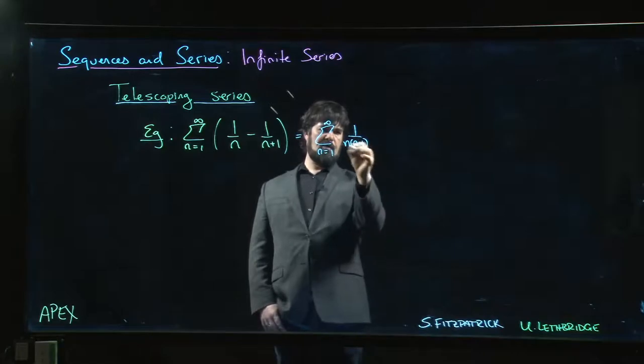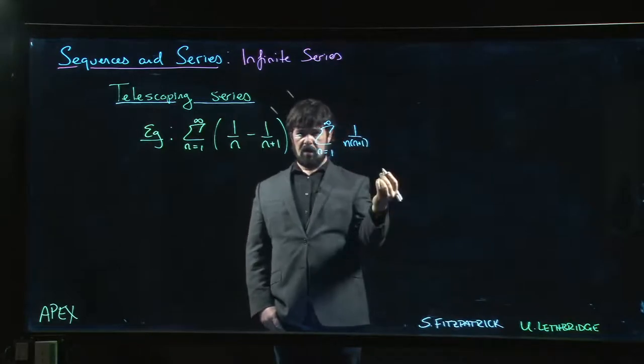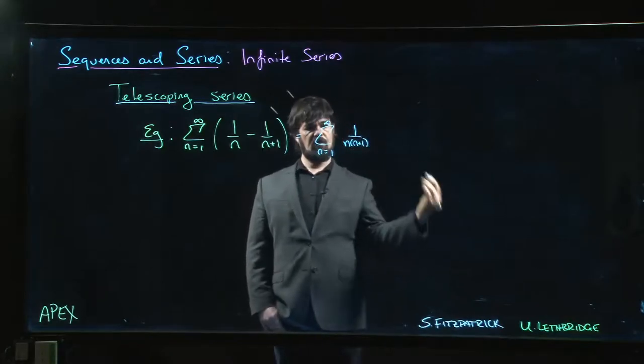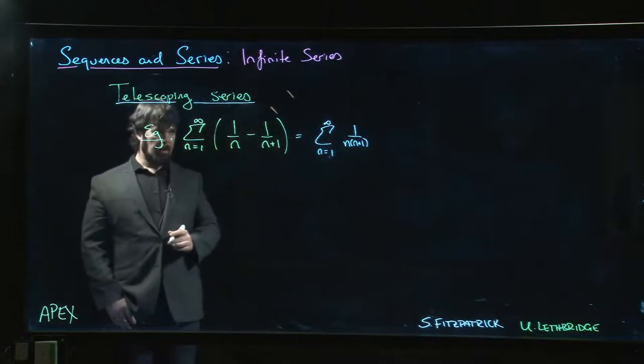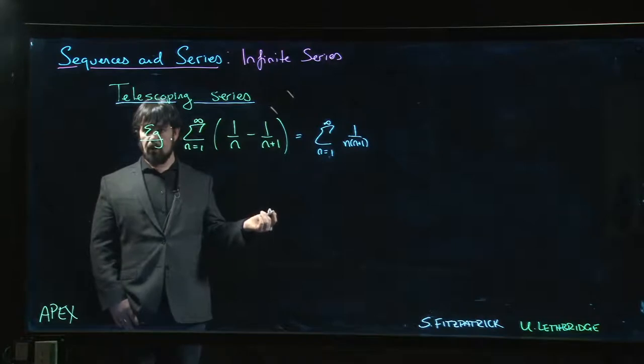And so that's roughly 1 over n squared, p-series, p equals 2 bigger than 1 converges. So we're pretty sure it converges, but we don't necessarily know what it converges to.